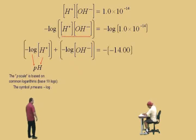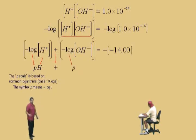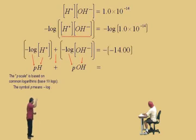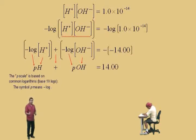We have a sum here. Negative log is represented by p, and for the hydroxide ion concentration, we write OH. So pOH means the negative log of the hydroxide ion concentration. And that equals — as we found in our previous calculation — the negative log of 1.0 times 10⁻¹⁴, which equals 14. This gives us an equation relating pH and pOH: their sum equals 14.